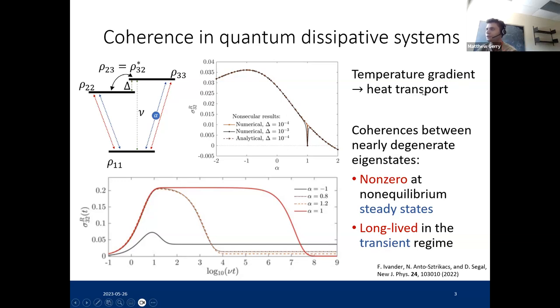You'll get heat transport in the situation where there are multiple reservoirs at different temperatures. In general, while the conventional understanding is that coupling to the environment kills off coherence, we find that for systems like this that have eigenstates close in energy, coherences between nearly degenerate states become relevant.